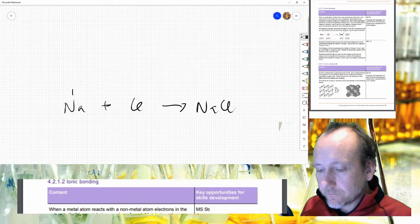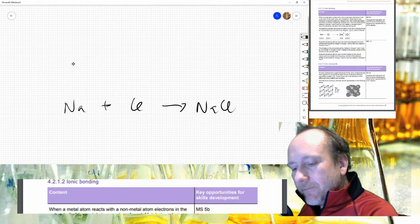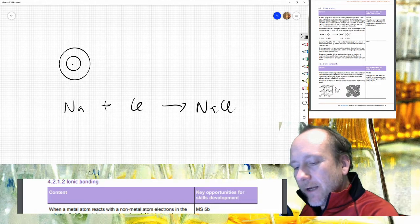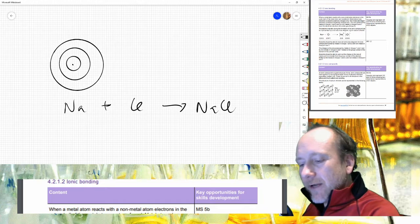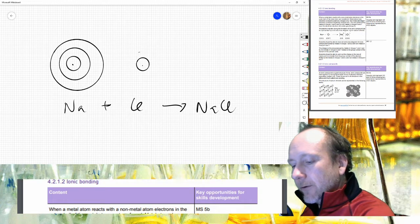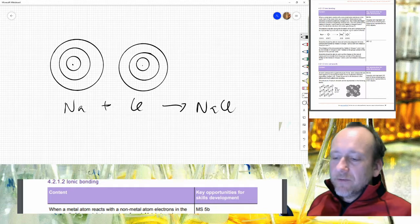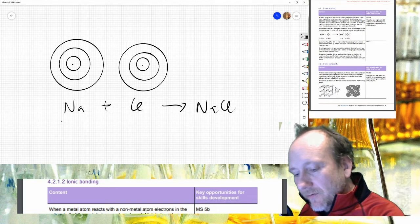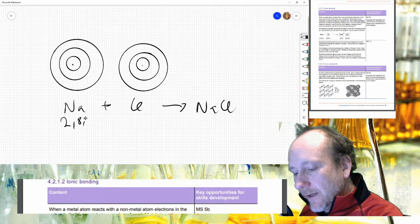So let's draw sodium. Let's give it a little nucleus. Then we have one shell, two shells, three shells. And the reason I know this is because I've done this many times. So sodium's electronic configuration is 2, 8, 1.